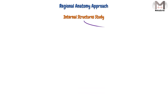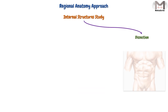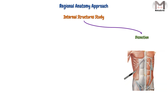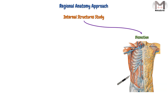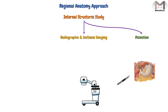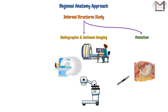The first one is by dissection, which means that we will dissect the human body by a scalpel and visualize these structures. While the second method is by radiographic and sectional imaging, which is the X-ray, CT scan, MRI, and others.